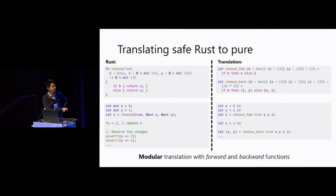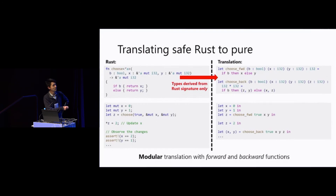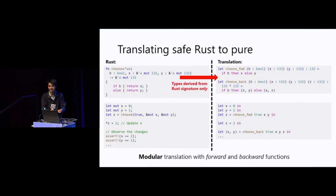Something interesting about this presentation is that it is very modular. To generate this snippet of code you don't need to know the body of 'choose' — all you need is its signature. The types of 'choose_forward' and 'choose_backward' can be derived from the signature alone. For 'choose_forward', you look at inputs and outputs and purify them by removing borrows. For 'choose_backward', you take the same inputs as 'choose_forward' plus the old values, and look at the output of 'choose'.